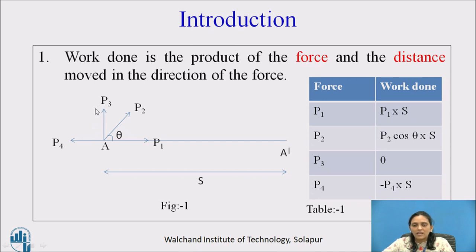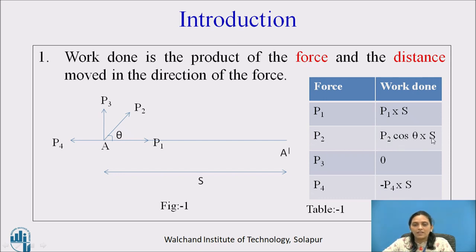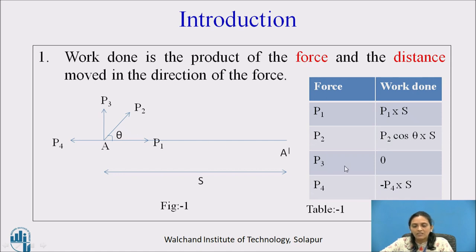P2 sin theta will not contribute to work done, and P2 cos theta will contribute because it is in the direction of displacement. So, work done by force P2 is P2 cos theta into S. Now see P3 — P3 force is not in the x direction, nor is any component of it in the x direction. So P3 does not contribute to displacement at all, and work done by P3 is 0.